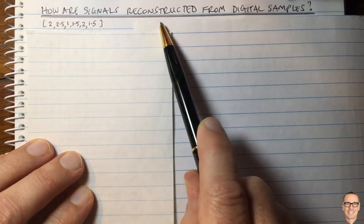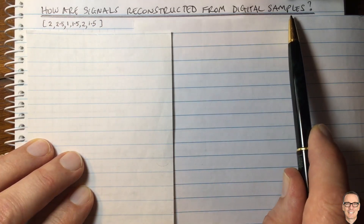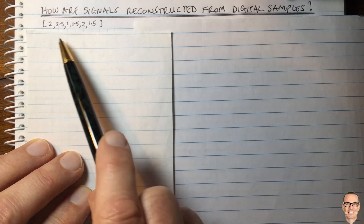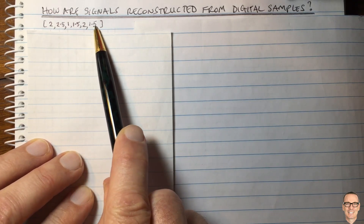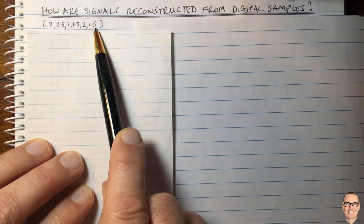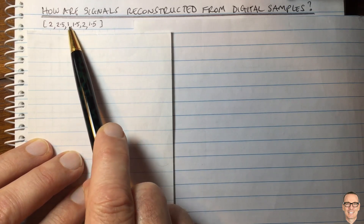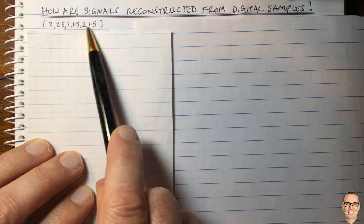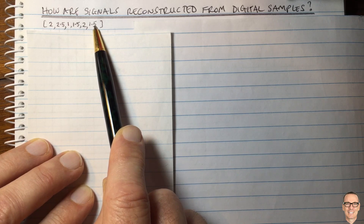How are signals reconstructed from digital samples? Here we have some numbers which are the digital samples stored in a computer, a memory stick, or on a mobile phone — for example, the numbers 2, 2.51, and so on. These are just numbers stored in discrete form.